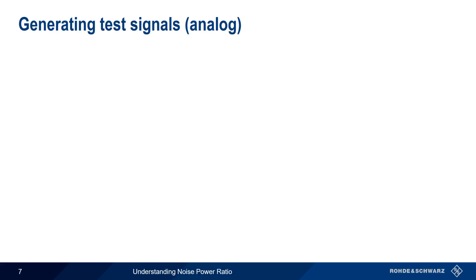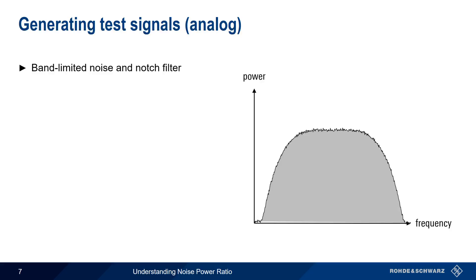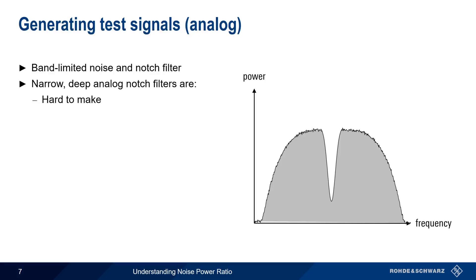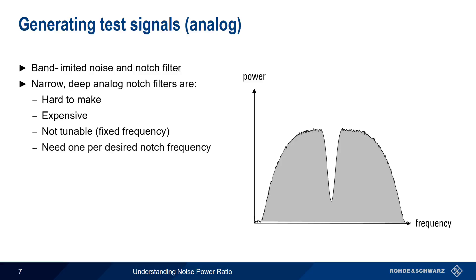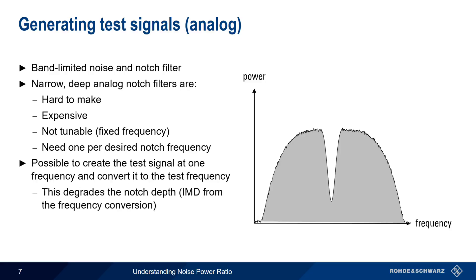We'll start by looking at how NPR test signals are created using an analog signal generator or noise generator. We begin by creating band-limited noise, ideally with the same width as the channel we're emulating, then use a notch filter to create the notch. The use of traditional analog notch filters is problematic, because deep, narrow notch filters are hard to make and relatively expensive. They also are usually not tunable — they have a fixed stop band, so we need a separate notch filter for each notch frequency. One attempt at getting around these limitations is to create the test signal at one frequency and then convert it to the test frequency. This approach doesn't work well, because the frequency conversion process creates intermodulation distortion and degrades the depth of the notch.